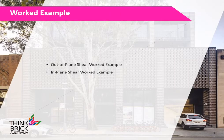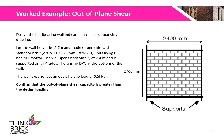We will now go through a worked example on how to determine the out-of-plane and in-plane shear capacity of an unreinforced brick wall. This example requires us to design a load-bearing wall with a total factored design loading of 0.5 kPa. The wall is 2.7 m high, made of standard brick units, using full bedding of M3 mortar. The wall spans horizontally at 2.4 m and is supported on all four sides. There is no DPC at the bottom of the wall.